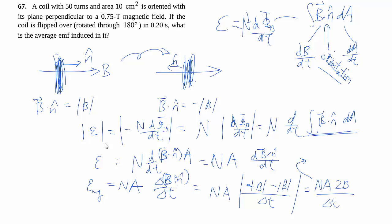I'm just going to slip this over here. We have 50 times my area, which is given in centimeters squared. So when converted, make sure to not just divide by 100, but divide by 100 squared, times 2 times my 0.75 tesla, all divided by 0.2 seconds. So the average EMF works out to be 0.375 volts.